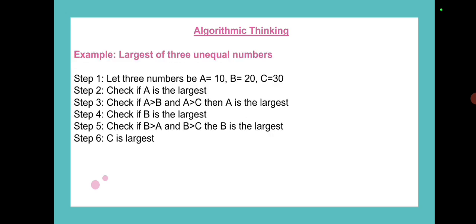Example: Let's suppose we are finding the largest of three unequal numbers. Suppose we have 10, 20, and 30. We want to check which number is the largest, so we will compare numbers. First, let's check if A is greater than B and A is greater than C, that means A is the largest. If B is greater than A and B is greater than C, then B is the largest. And step 6 is C is largest. So we have checked the largest.